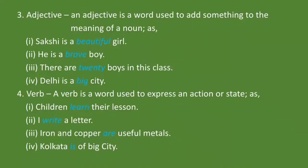Adjective: An adjective is a word used to add something to the meaning of a noun. Noun के संबंध में जो शब्द कुछ बताता है, उसकी विशेषता बताता है, उसे adjective कहते हैं. जैसे, Sakshi is a beautiful girl. यहाँ beautiful adjective है क्योंकि यह Sakshi की विशेषता बताता है. He is a brave boy. यहाँ brave adjective है क्योंकि यह boy की विशेषता बता रहा है. There are twenty boys in this class. यहाँ twenty और this दोनों ही adjective हैं.